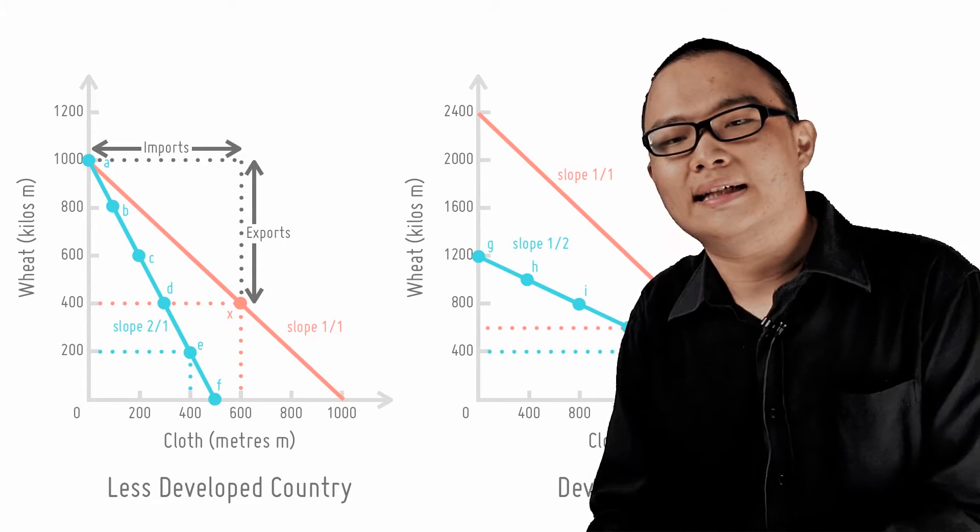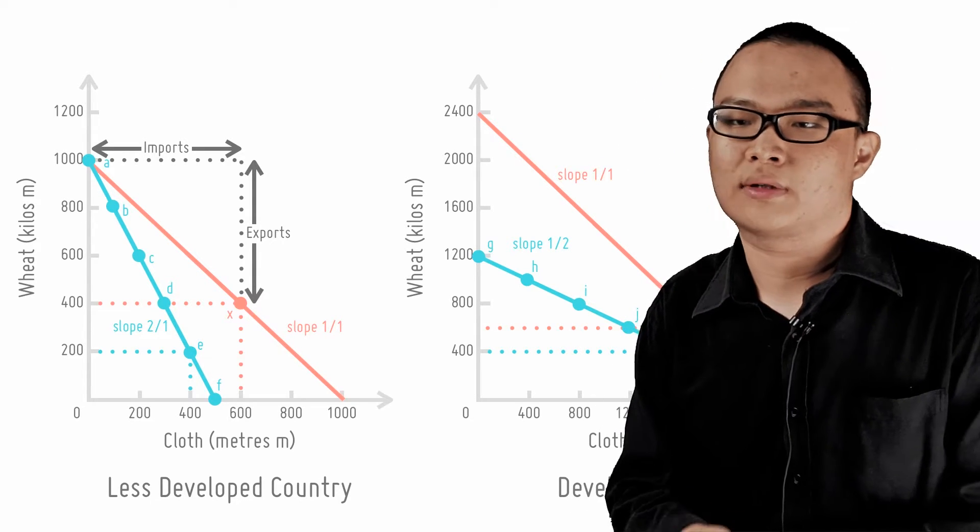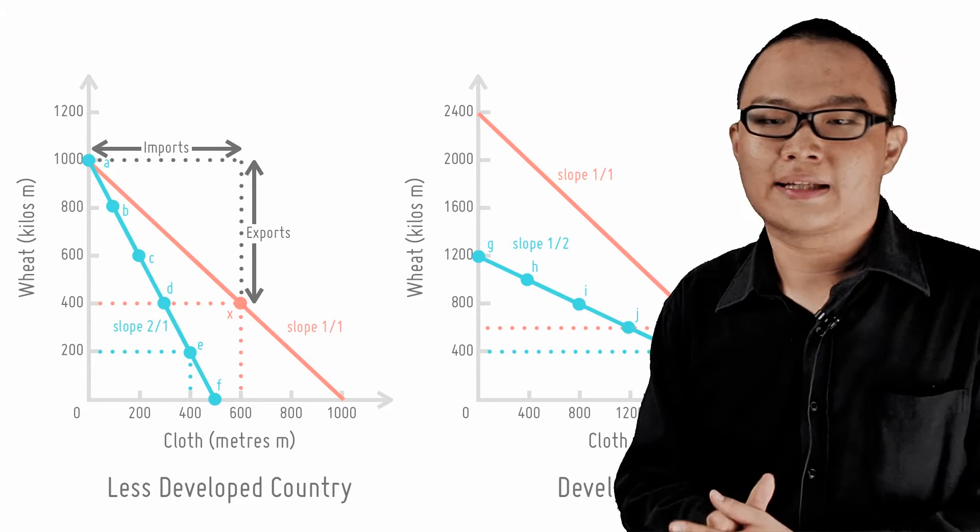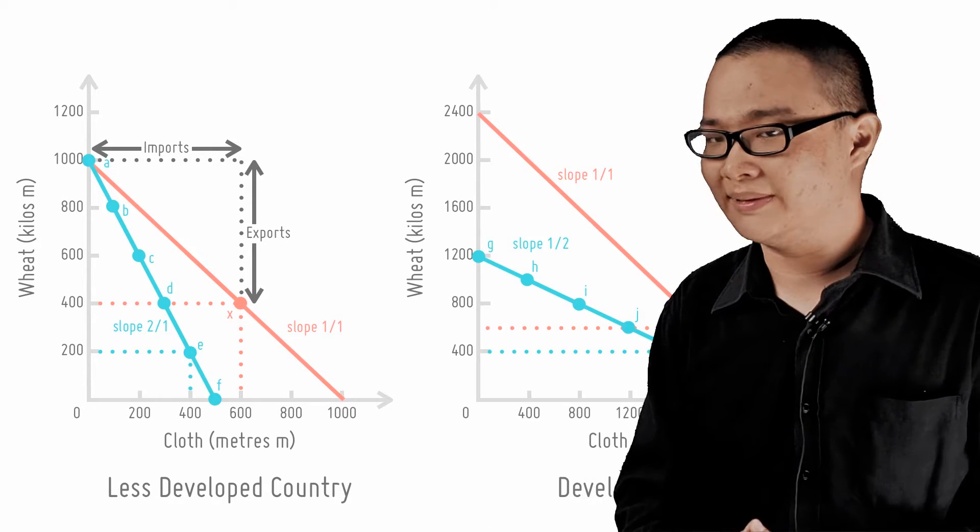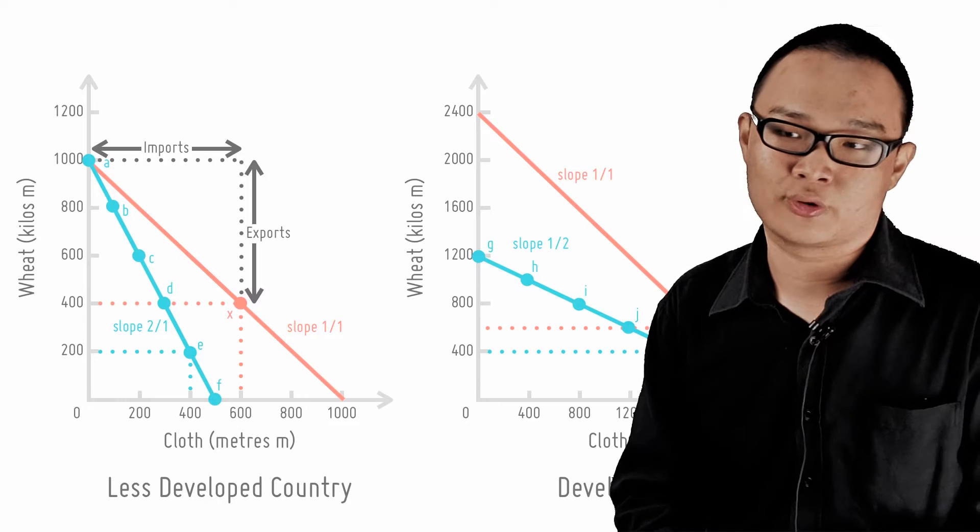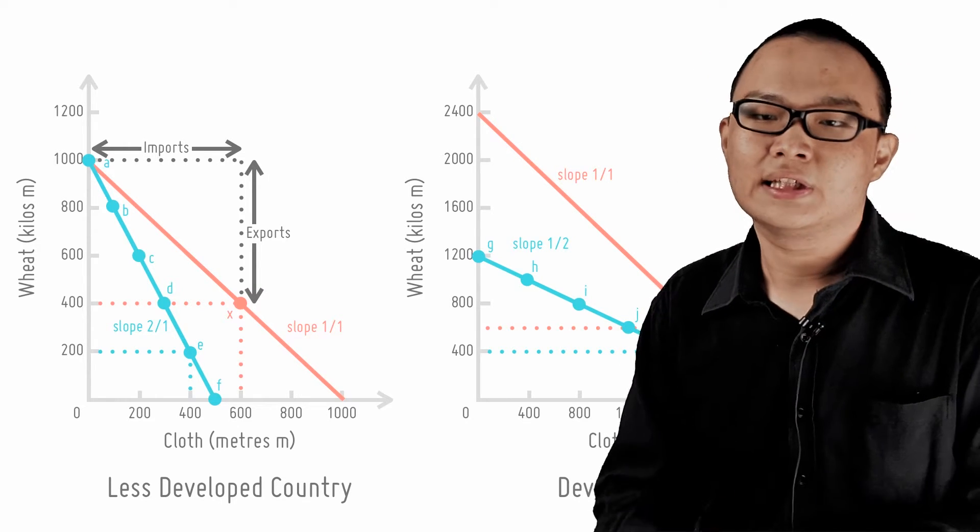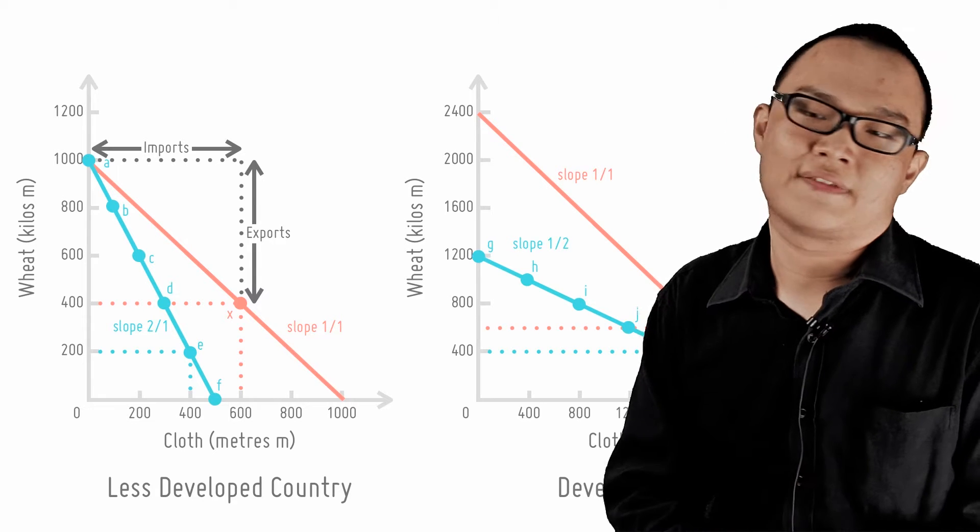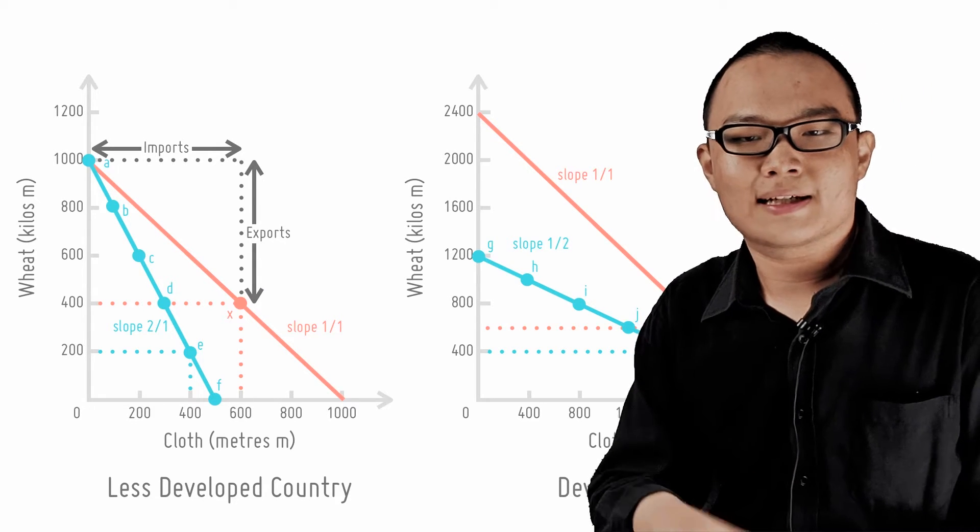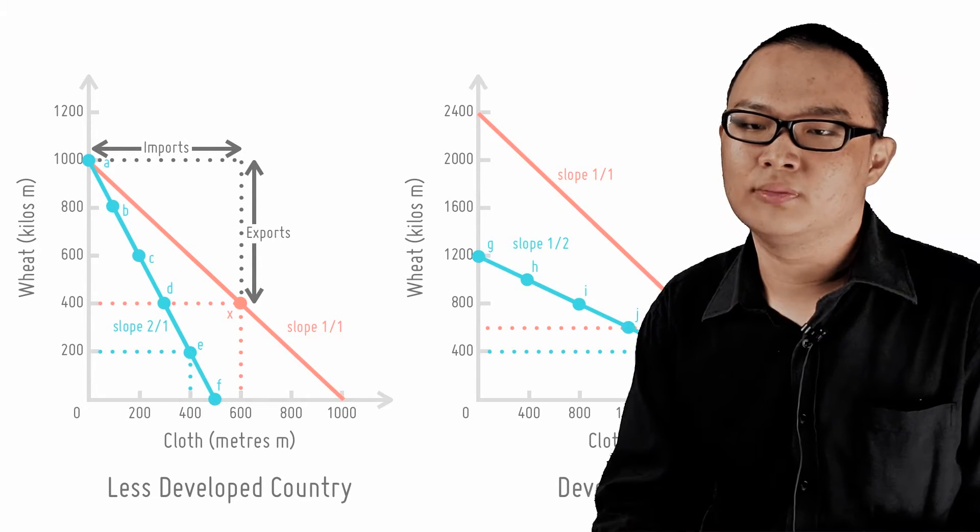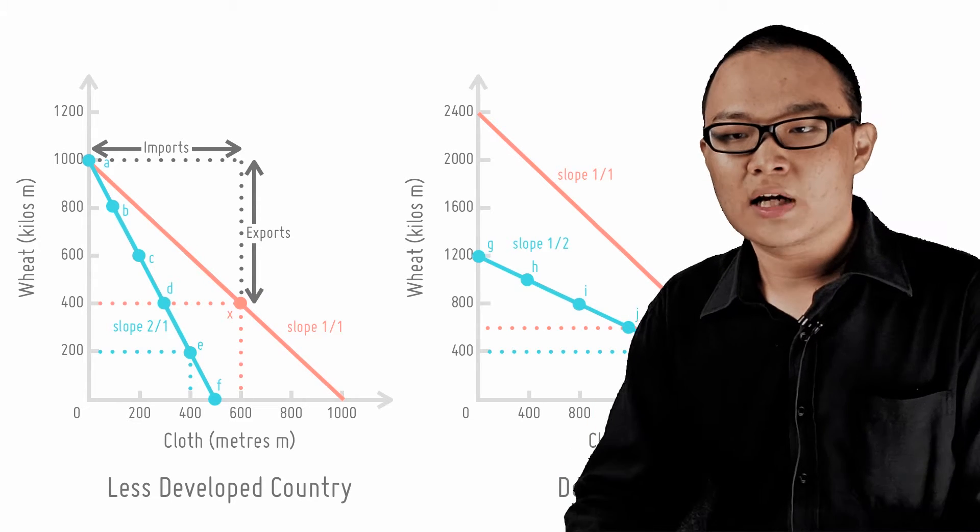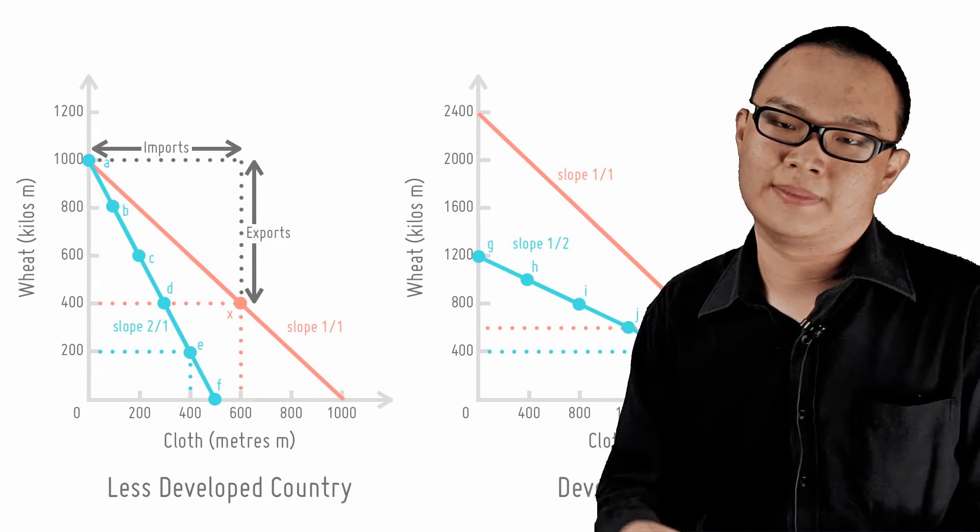Let's say that the LDC decides to consume only 400 kilograms of wheat domestically. There will be a surplus of 600 meters of wheat traded with the developed country. This buys 600 meters of cloth on exchange. This is point X on the left-hand side diagram. Under autarky and producing and consuming 400 kilograms of wheat, only 300 meters of cloth could be consumed.